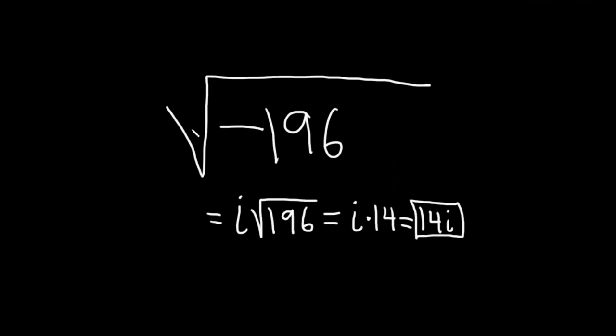However, there is a much faster way to do this. So ideally, you want to get to the point where you look at this and you say, okay, there's a negative under the root, and that's going to become an i. And the square root of 196, well, that's 14. So the answer is 14i.